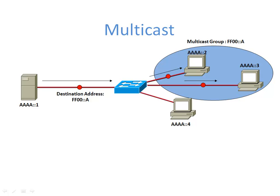Multicast is one-to-many communication. We send from one IPv6 address, AAAA::1, to a destination address that's a multicast group number. The reserved multicast range for IPv6 is FF00 through FF0F in the first field. For example, FF00::A is a multicast group address. Two hosts — AAAA::2 and AAAA::3 — have joined that multicast group, so traffic sent to FF00::A is received by both of those PCs but not by the PC with address AAAA::4, which did not join that group.